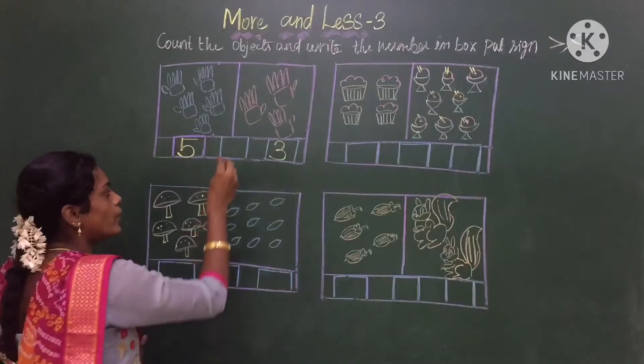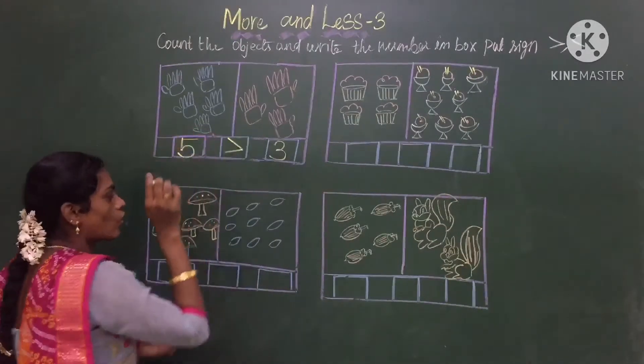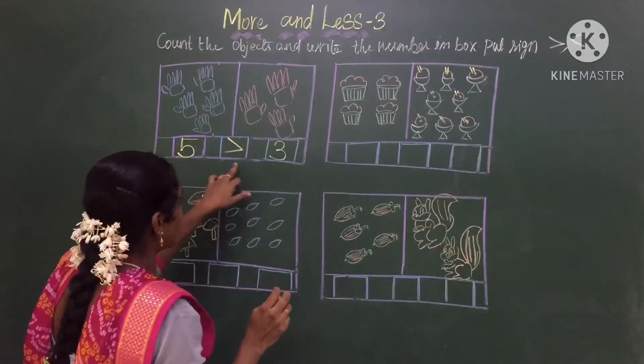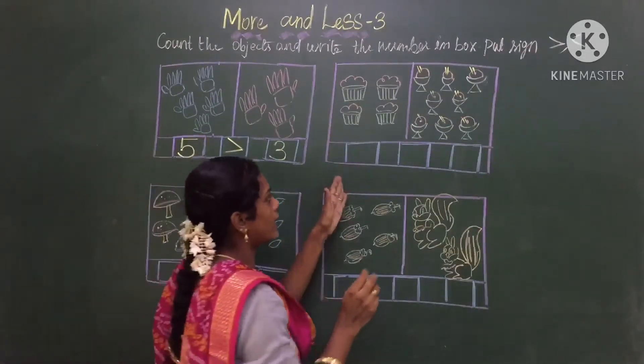So for this we have to use the sign like this. You know the crocodile mouth should be opened like this. Which number is big? According to that we have to put the sign. Now come to the next one.